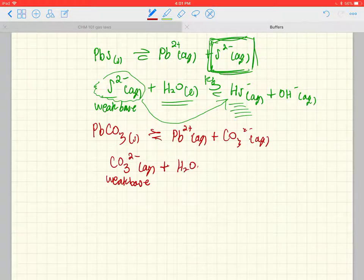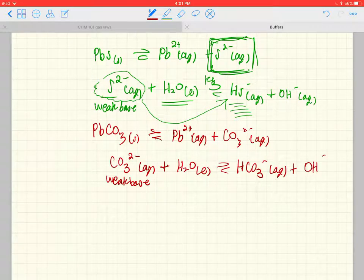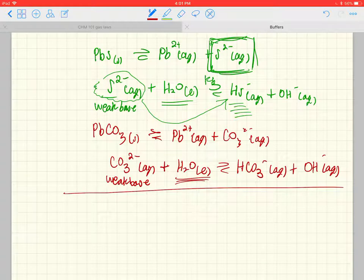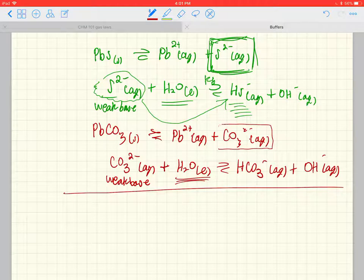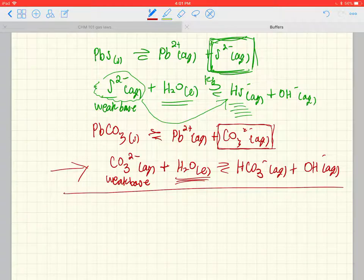It forms bicarbonate ion, which is the conjugate acid of carbonate, and a little bit of hydroxide. The concept is that water here decreases the concentration of carbonate a little bit by this acid-base hydrolysis reaction. If we decrease the concentration of carbonate, this reaction will be shifting to the right a little bit, which means lead carbonate is more soluble.